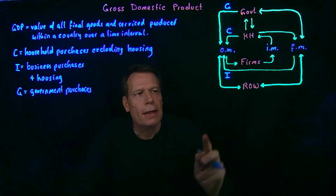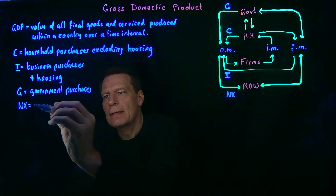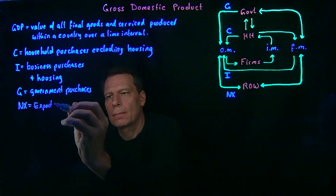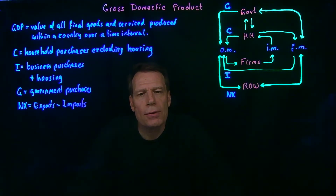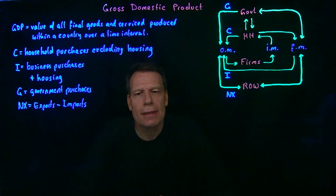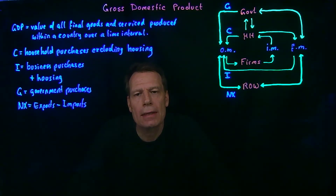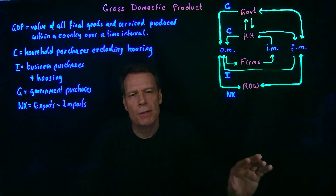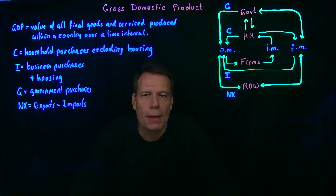The final category is what the rest of the world does, which we've called net exports. Net exports equals exports minus imports. Exports are goods produced in this country but not consumed here — not by the government, businesses, or households — instead they're consumed by people in the rest of the world. Since these goods are produced here, we want to count them in GDP, and since they haven't been counted in any other category, we have to add them.